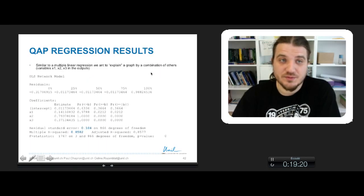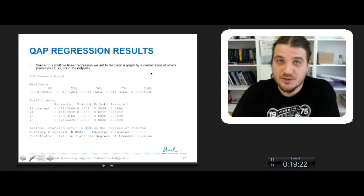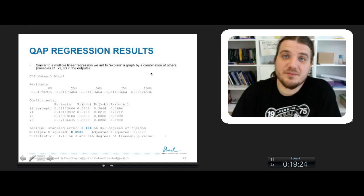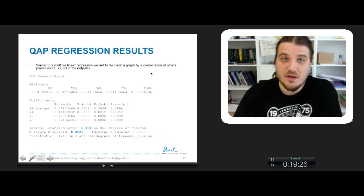In fact, this is very similar to multiple linear regression when you want to explain a variable by a combination of some other variables. When you run the netlm function of the package SNA of R, you've got this kind of output.